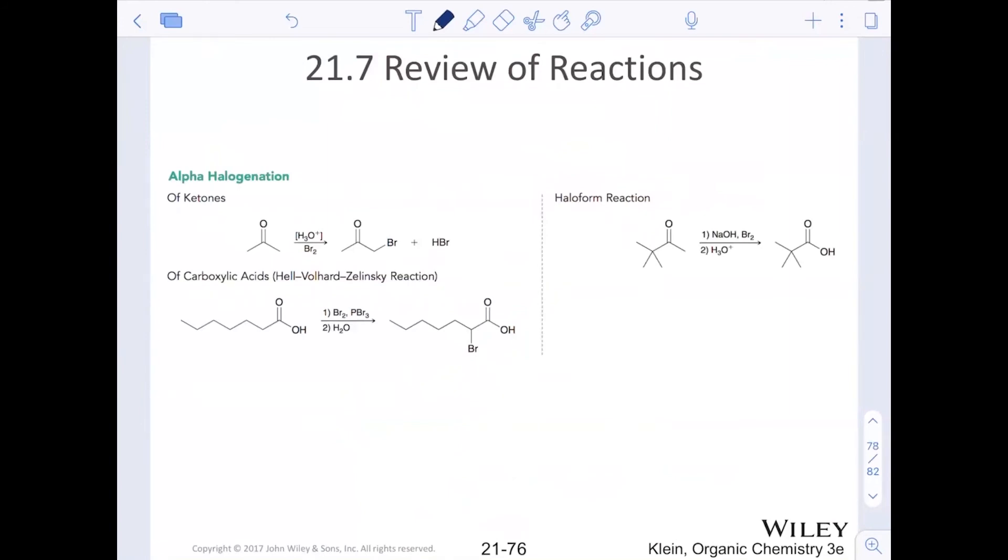A couple of reactions just to remember. I like this review of reactions at the end so that we can see. Alpha halogenation had many different forms for our ketones or aldehydes. Acid catalyzed was generally the first reaction that we did, and then the haloform reaction with the base catalyzed where it polyhalogenated the alpha position. You can also halogenate the alpha position of carboxylic acids with the HVZ reaction.